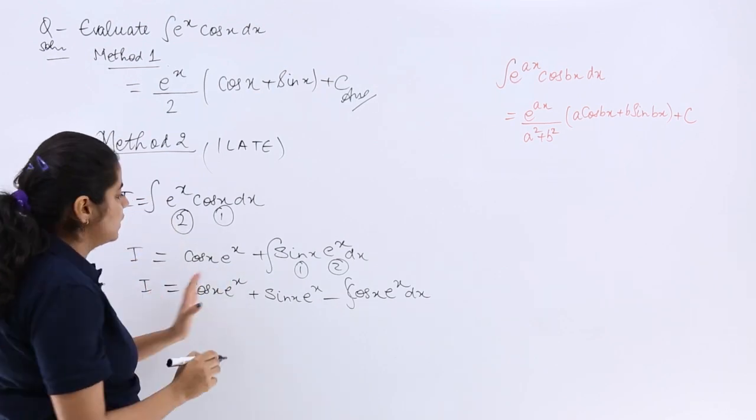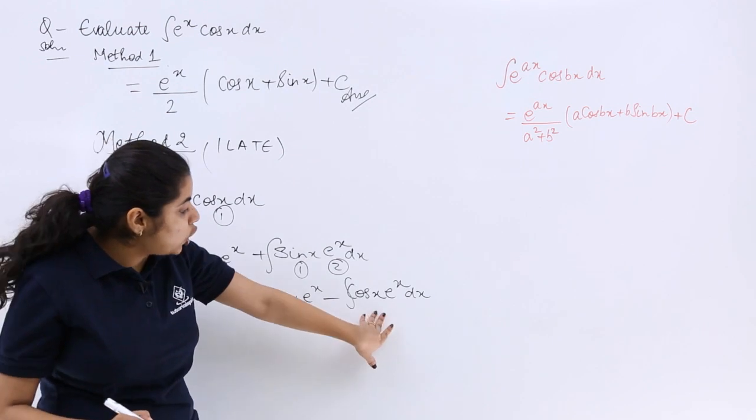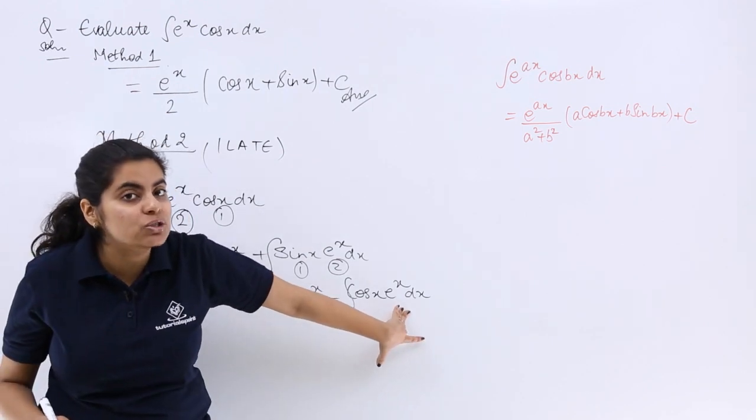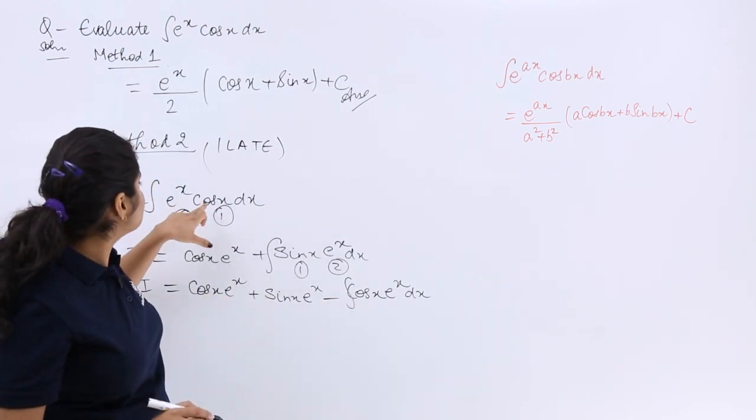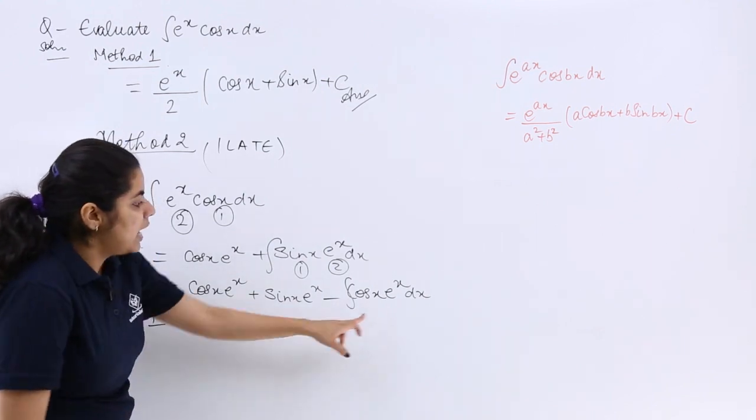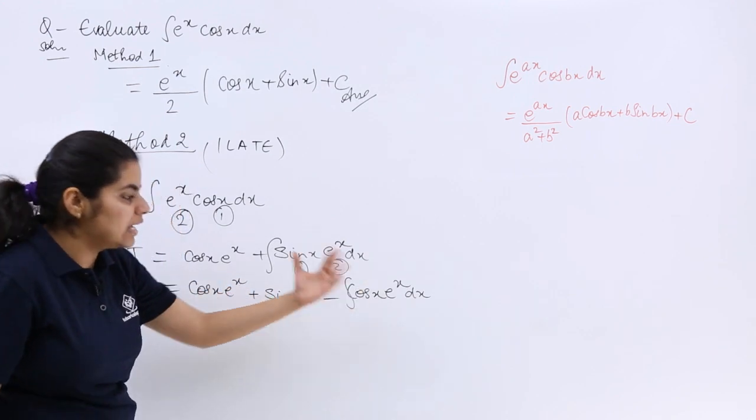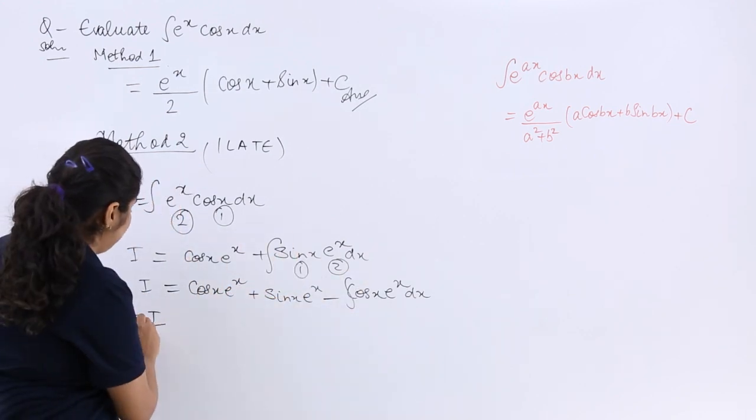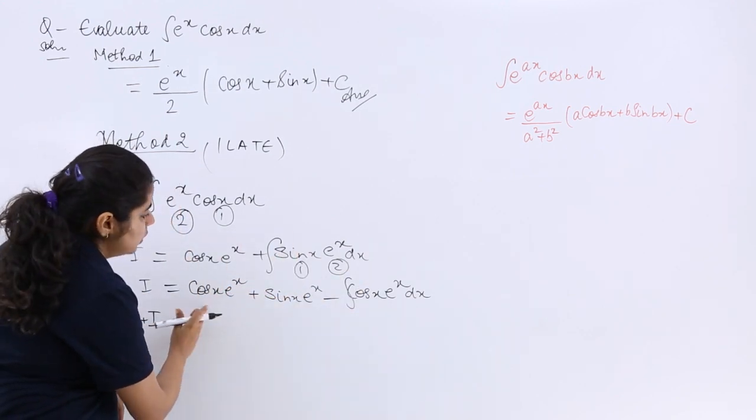So I is having this kind of a value. Now see, cos x multiplied by e raised to the power x is what? Cos x multiplied by e raised to the power x is I only. So it is I here and this is also I. Minus I going to the other side makes it I plus I is equal to this stuff.